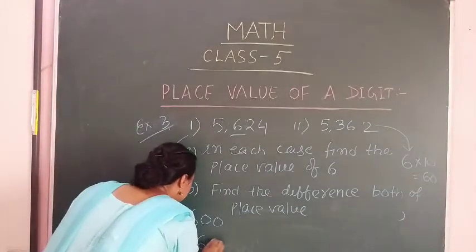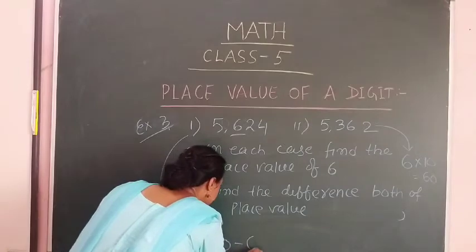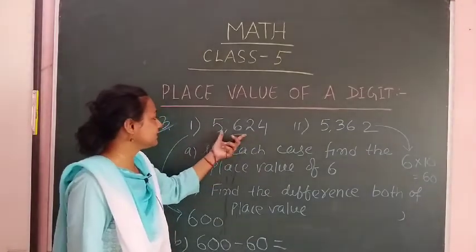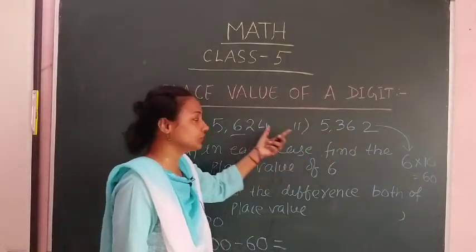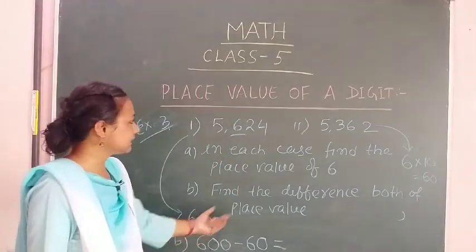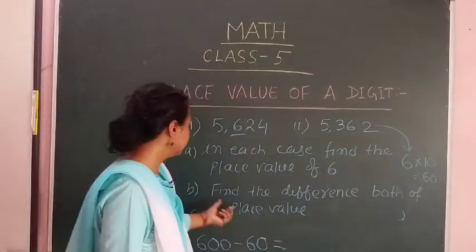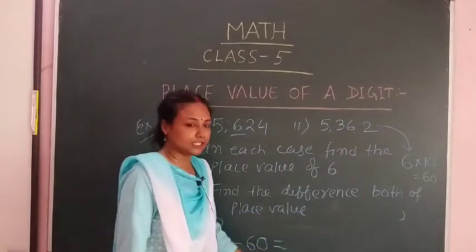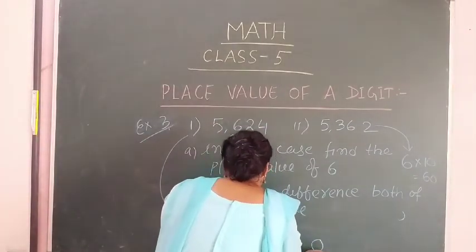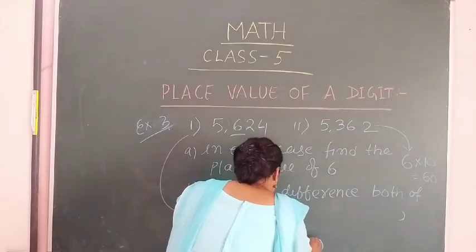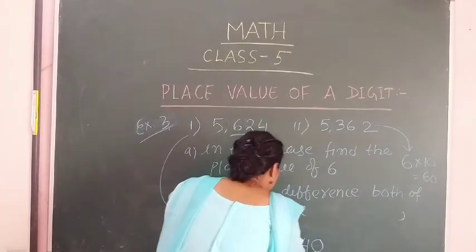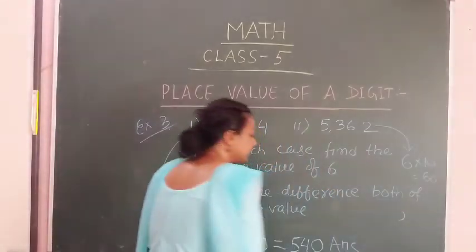Now find the difference of both place values: 600 minus 60. In both numbers — 5624 and 5362 — the place value of 6 is 600 and 60 respectively. The difference is 600 minus 60, which gives us 540. So 540 is the answer.